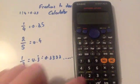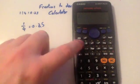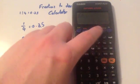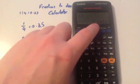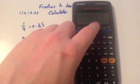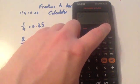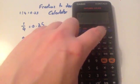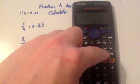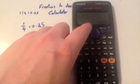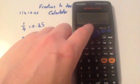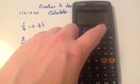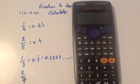And finally, two sevenths. So two, fraction button seven, press equals, and you get two sevenths. Press the SD button. Now this time it says 0.285714. There's a dot above the two and a dot above the four. That means that all of these numbers in between and including the two and the four recur. So if I press the SD button again, you'll see it in full. So it goes 0.285714. Then it repeats again, 285714.